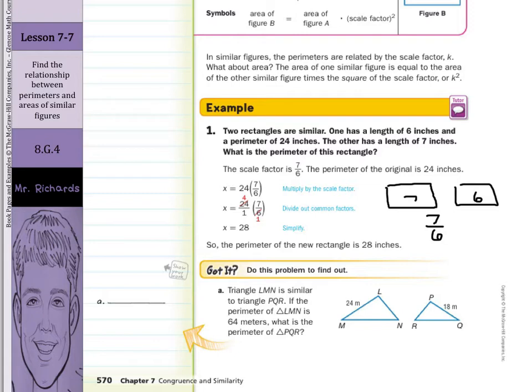So, triangle LMN is similar to triangle PQR. If the perimeter of LMN is 64 meters, what is the perimeter of triangle PQR? Well, we're told the perimeter of LMN is 64 meters here. And we're going to find from 64 to the perimeter there. So the way we're going to write the scale factor is we'll start with the 18, and write that over the 24. Now, it's easier if we simplify that. So if we divide by 6 on top and bottom, we end up with 3 fourths. So our scale factor is 3 fourths.